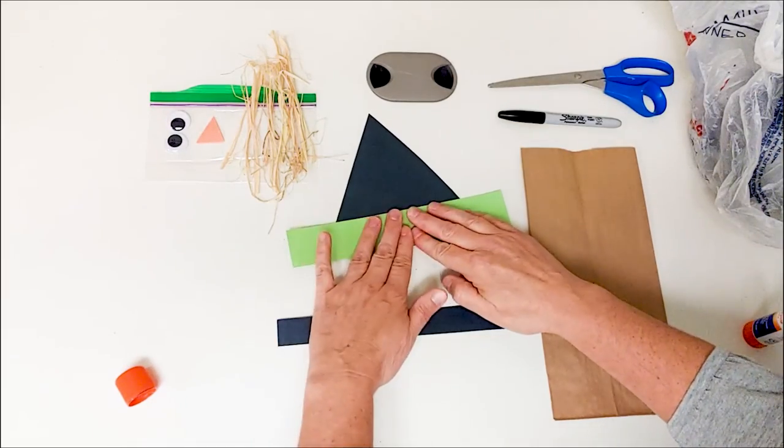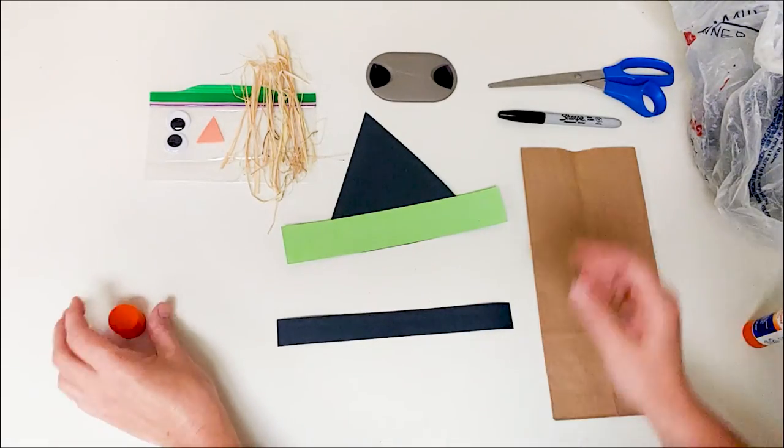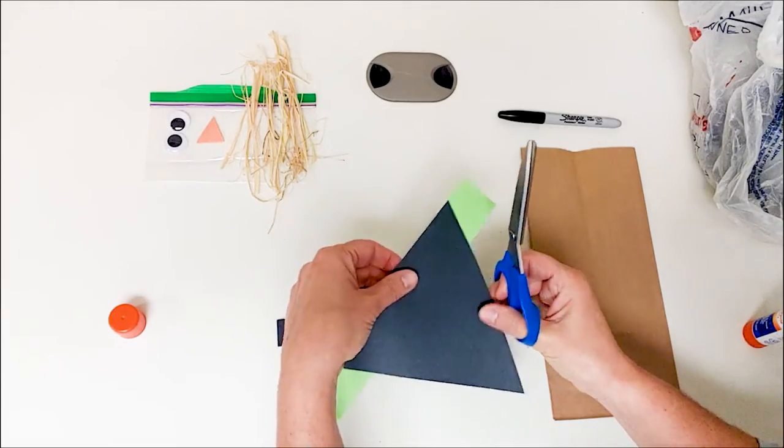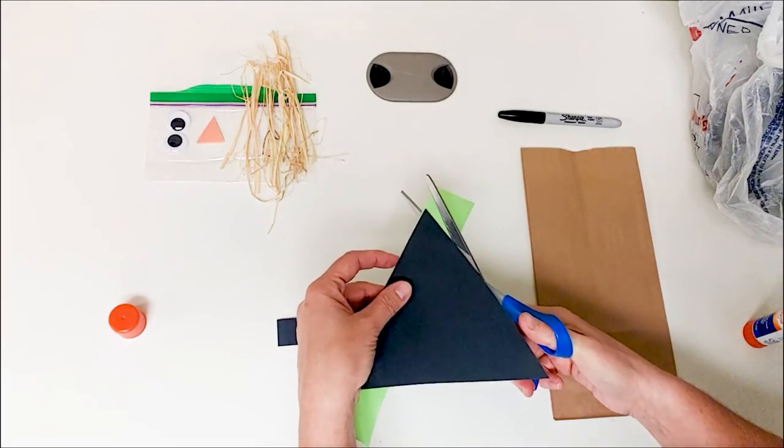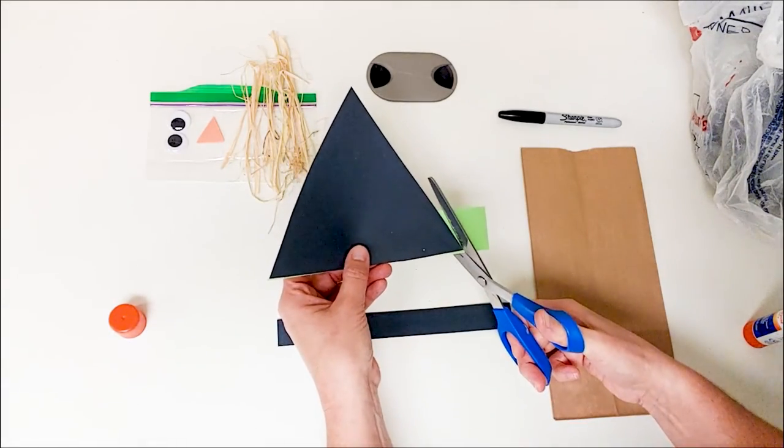And now we want to take our scissors and trim off the ends. So I'm going to turn it over so I can see the end and I'm just going to cut the extra green.